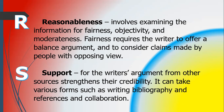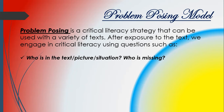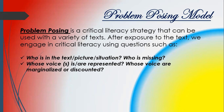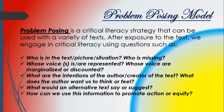The problem posing model is a critical literacy strategy used with a variety of texts. After exposure to the text, engage with the following questions: Who is in the text or picture situation, and who is missing? Whose voice is represented, and whose voice is marginalized or discounted? What are the intentions of the author or creator? What does the author want us to think or feel? What would an alternative text say or suggest? And how can we use this information to promote action or equity?